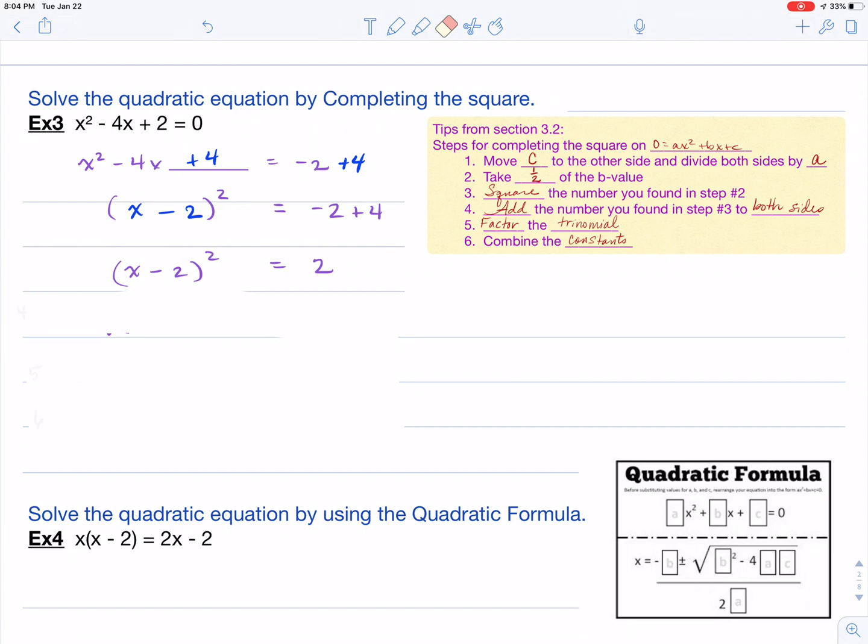Now what I'm going to do is use the square root property to get x alone. So the next thing I'm going to do is take the square root of both sides. Don't forget your plus or minus. Squares and square roots cancel each other out, so you're just left with x minus two over on the left. Then you can add your two to both sides, and you have x equals two plus or minus the square root of two.